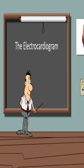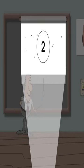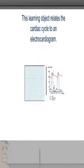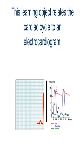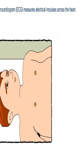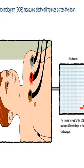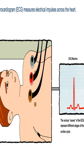Welcome to the electrocardiogram. This learning object relates the cardiac cycle to an electrocardiogram. The electrocardiogram, or ECG, measures electrical impulses across the heart. The various waves of the ECG represent different stages of the cardiac cycle.